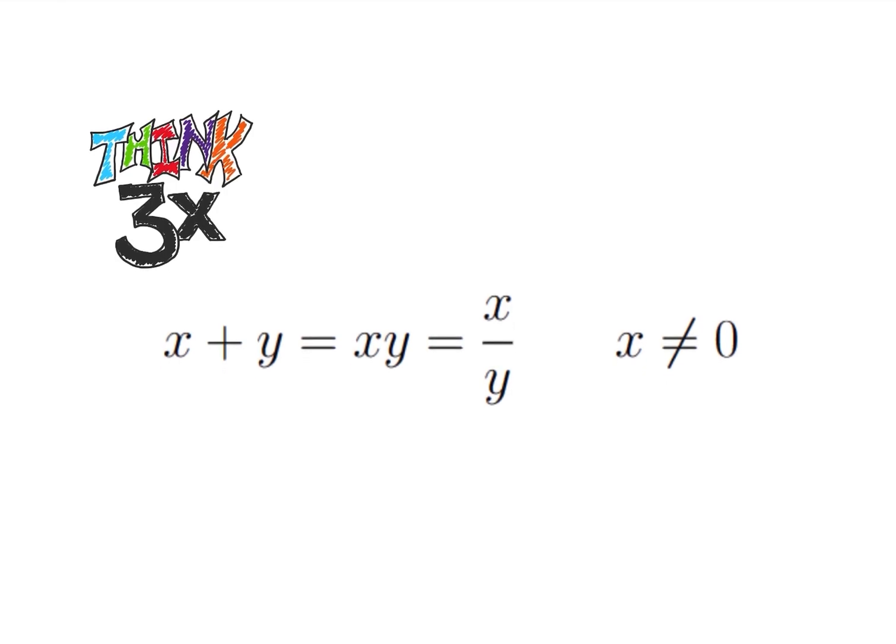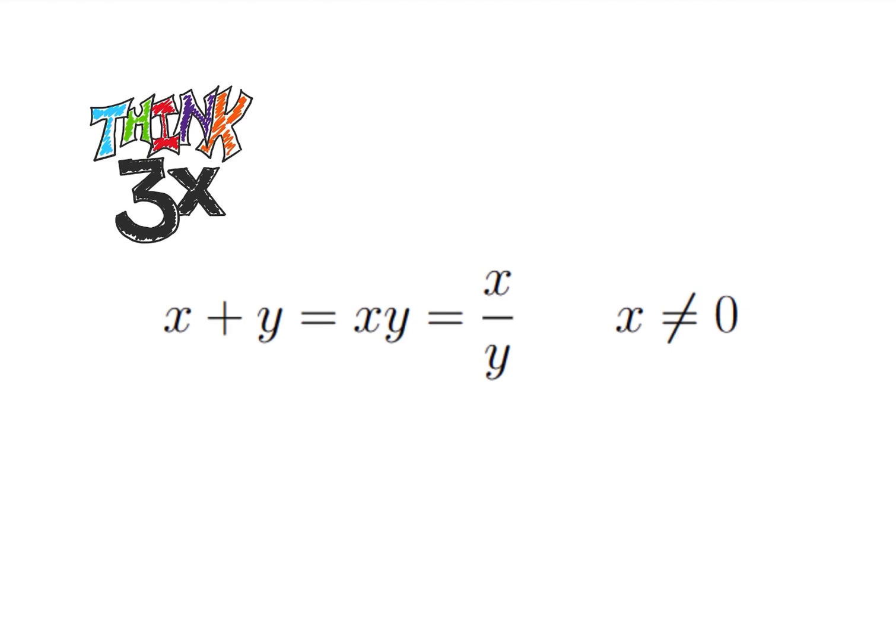If I'm looking at this problem, I can isolate a few things. Let's first look at this second half of my equation. I have xy is equal to x over y. What I can do is rewrite this as x times y minus 1 over y is equal to 0.